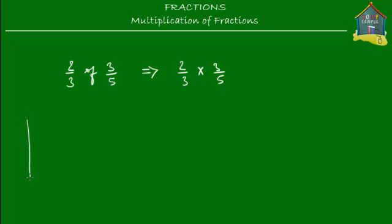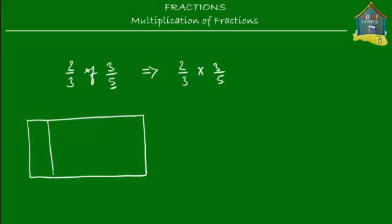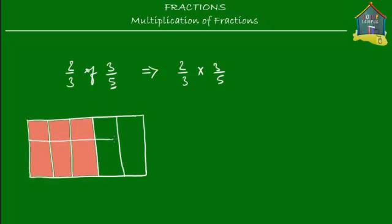Let's use some visual aid. I make a rectangle, and on it I'm going to mark these two numbers: two-thirds and three-fifths. First I mark three-fifths on it, so I cut up this rectangle into five equal-sized parts. Three-fifths would be three out of those five rectangles.